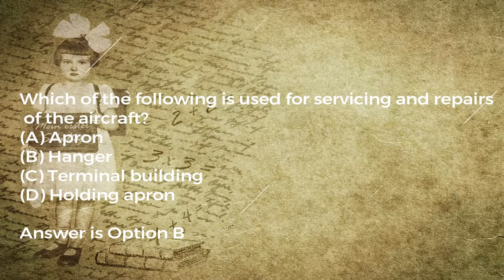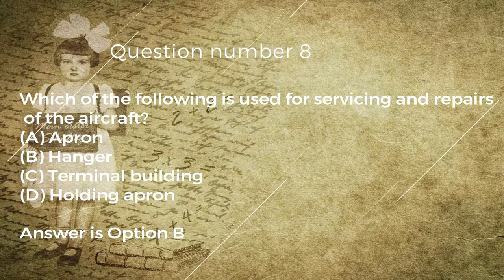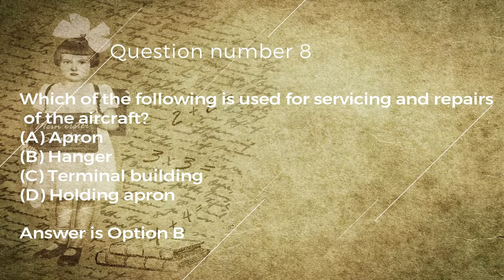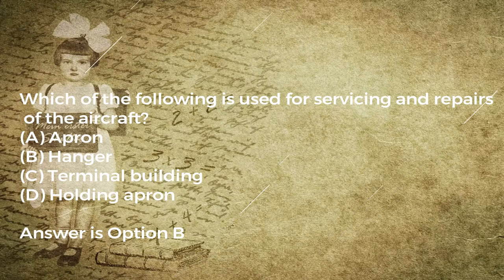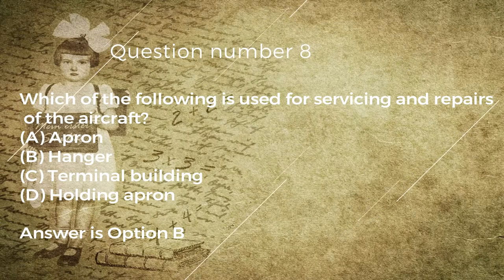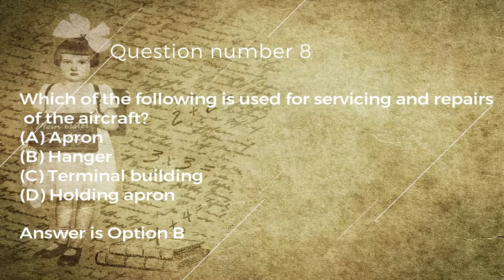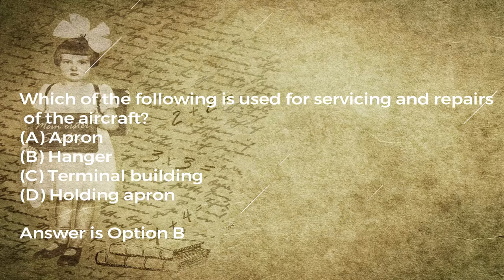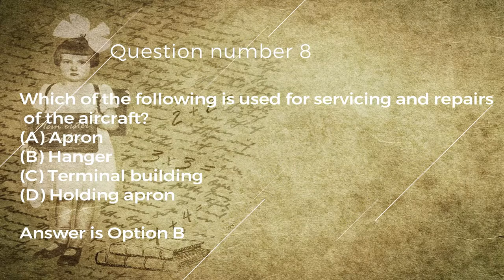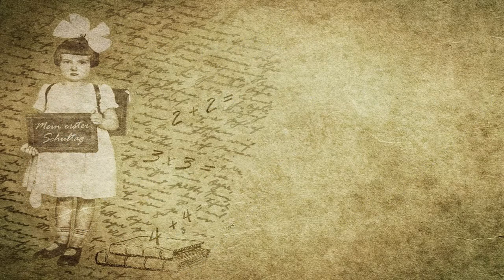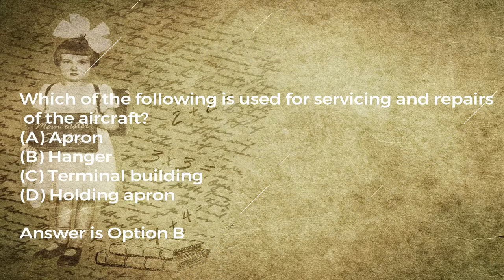Question number eight: which of the following is used for servicing and repairs of the aircraft? A) apron, B) hangar, C) terminal building, D) holding apron. Answer is option B.